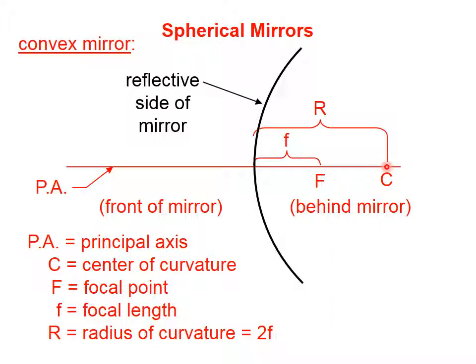The distance between the center of curvature and the mirror is called the radius of curvature, and the distance between the focal point, capital F, and the mirror is the focal length, little f. So the focal length is little f, the focal point is capital F. And it turns out that the focal length is one half of the radius of curvature.